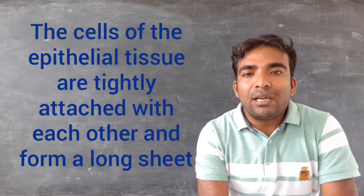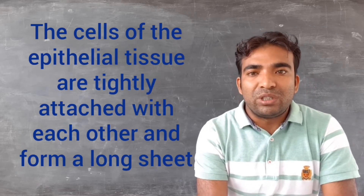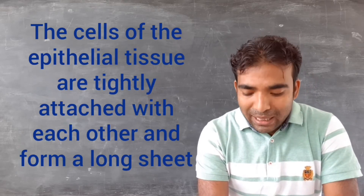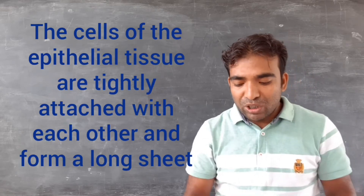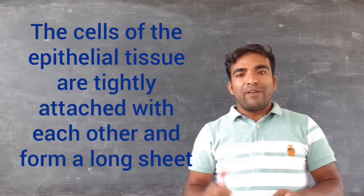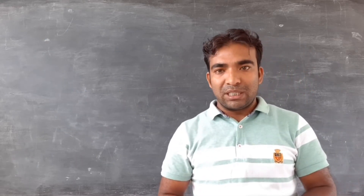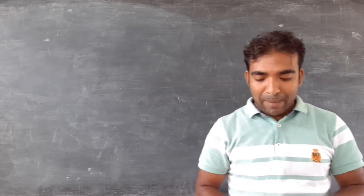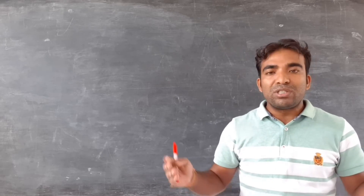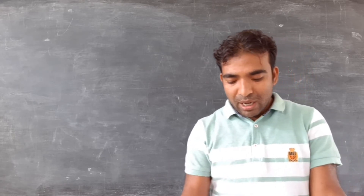Regarding the structure of epithelial tissue: the cells found in this tissue are tightly attached with each other and they form a continuous sheet. Therefore, there is no intercellular space found in the epithelial tissue because the cells are tightly attached with each other.